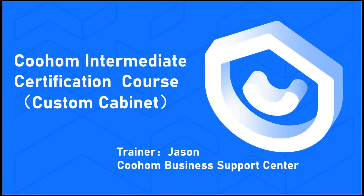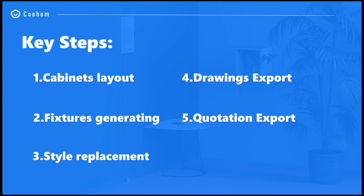Hey everyone, this is Jason, welcome back to my class. Today we will learn how to use our customized tools to design a kitchen with our parametric models. There are some key steps in custom cabinet design: first you need to set the layout. Normally we start with the corner or chamfer cabinet, and after setting the layout we will generate some fixtures for the cabinets including the countertop, baseboard, sink, and crown molding.